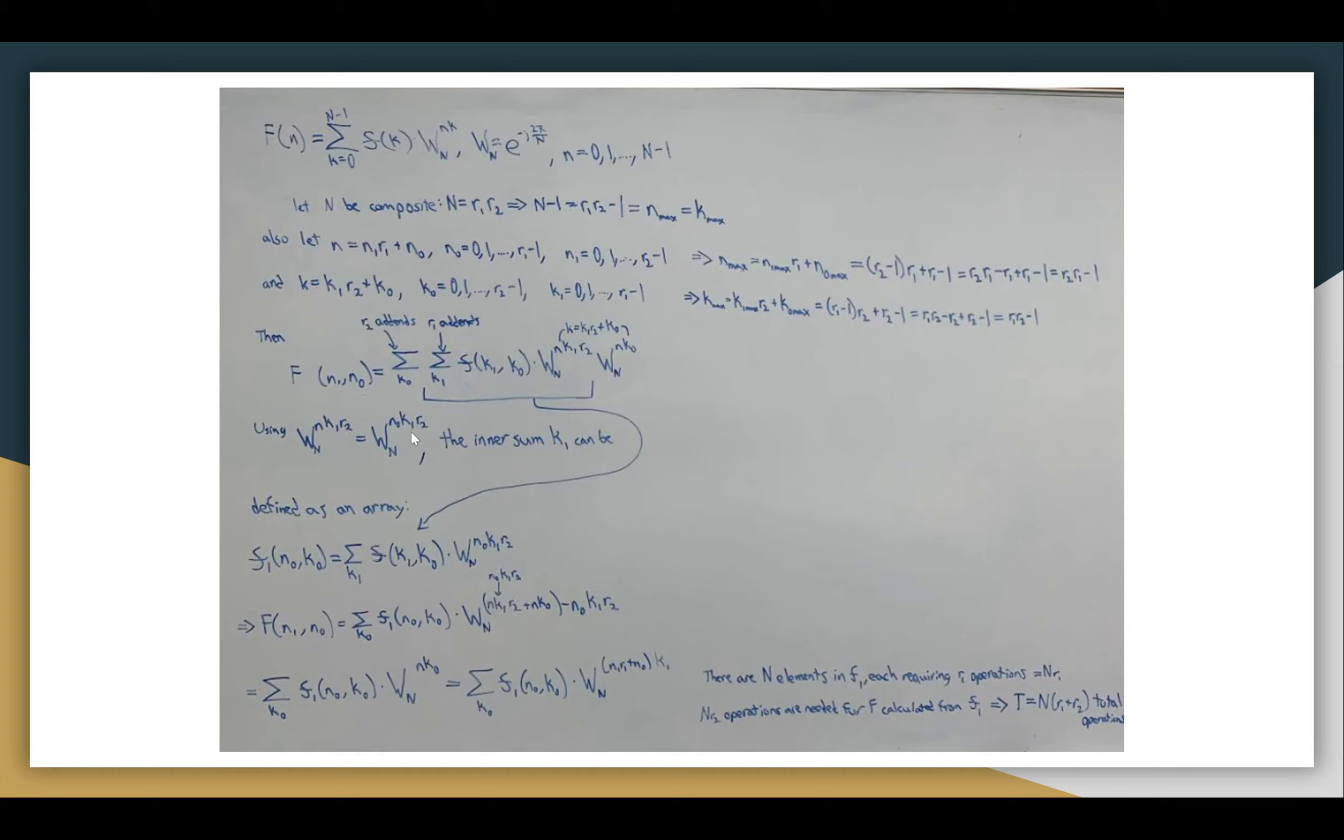To simplify this further, we use the fact that W sub-n raised to the power of lowercase n K1 R2 equals W sub-n equaling lowercase n not K1 R2. This is a provable property of complex numbers that was just directly given in the original documentation, but we don't need to go into detail about the complex arithmetic that is behind that.